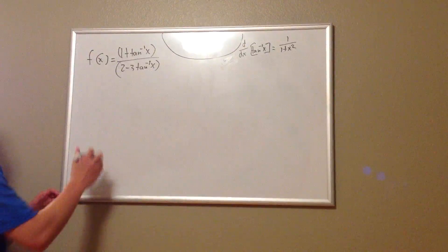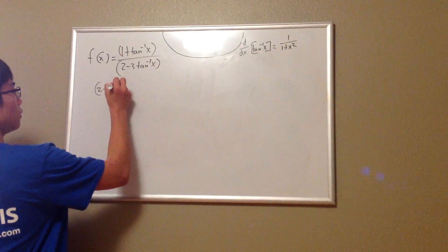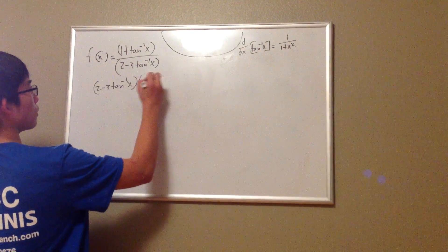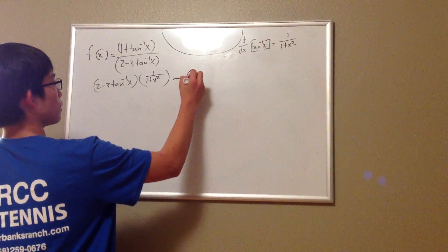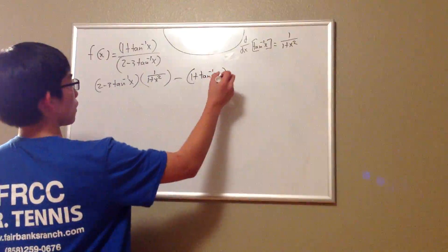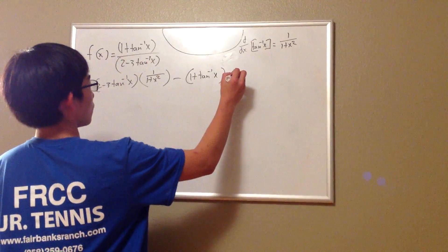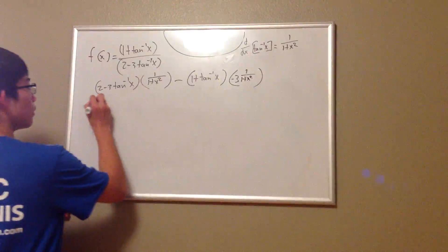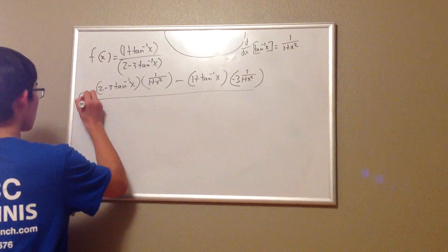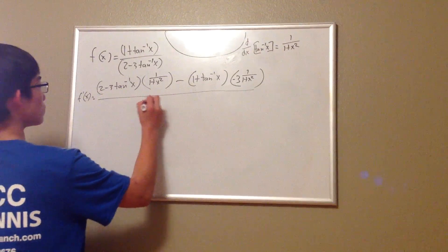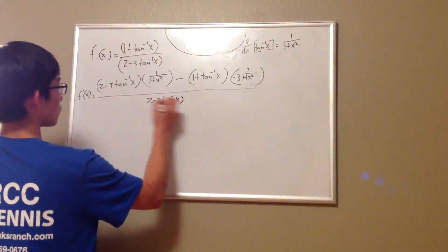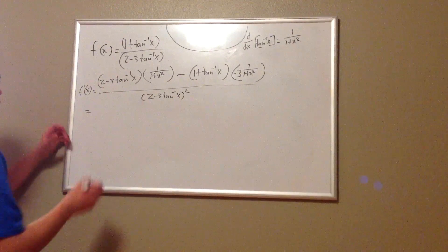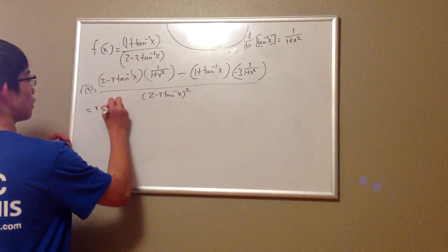We're just going to apply that to this function — low d high minus high d low. So this is what we should end up with, and after that one step of calculus, it's all algebra again, just like the majority of calculus problems.